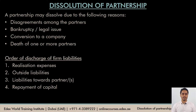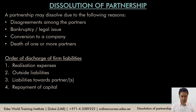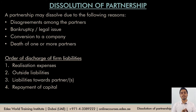When a firm dissolves, the firm will sell away all its assets — the non-current and the current assets — realize the money, and use that money to first pay all the liabilities of the firm. The remaining cash or assets will be distributed among the partners based on whatever balances they hold in the firm. What is the order in which the firm has to discharge its liabilities? First, the money that is realized is used to pay for the dissolution expenses, which could include certain legal and court expenses.